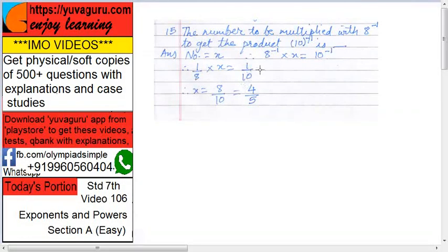Raised to 1 is forgettable. We need not write it. So 1 by 8 into X equals to 1 by 10. X equals to take 8 on this side. 8 by 10 equals to 4 by 5. So X equals to 4 by 5.